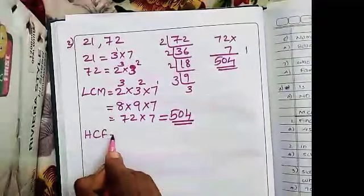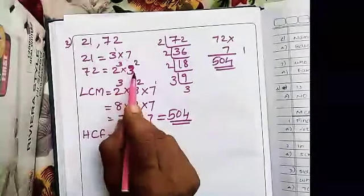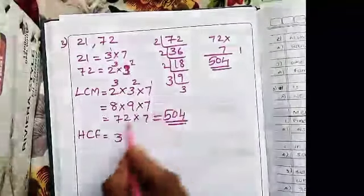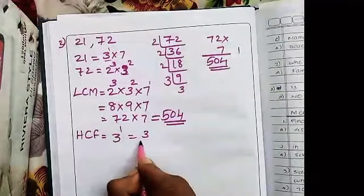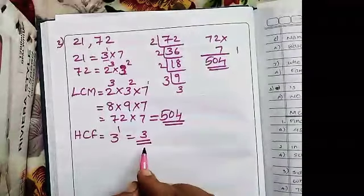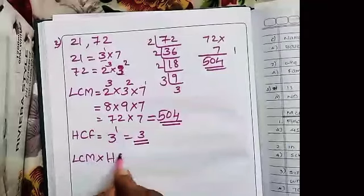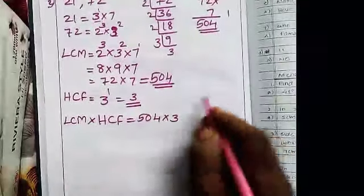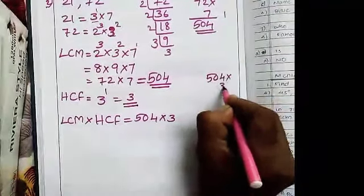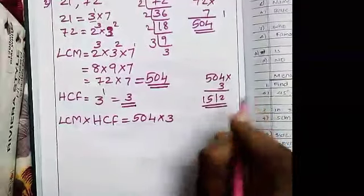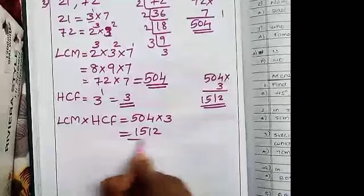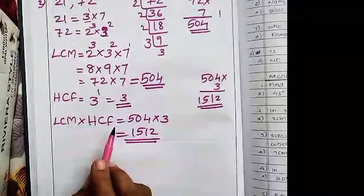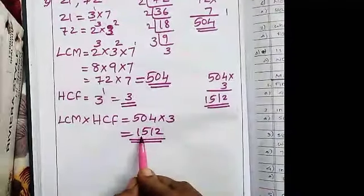Now finding the HCF: select the common prime factors. The only common factor between 21 and 72 is 3. The lowest power is 3 raised to 1. So HCF equals 3. Now find the product: LCM into HCF equals 504 into 3, which equals 1512.